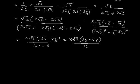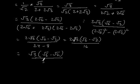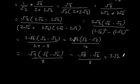This equals √3(√6 − √2) divided by 8, which is (√18 − √6)/8, which equals (3√2 − √6)/8. That is our answer for part 3.